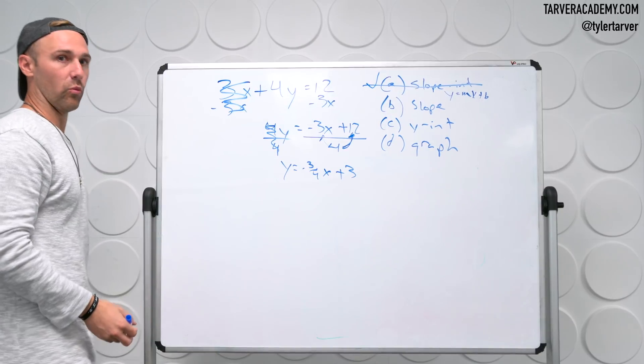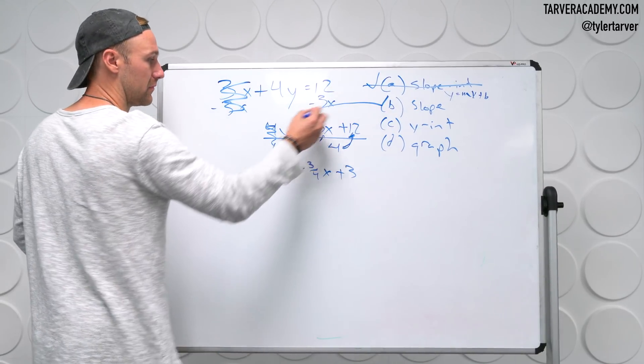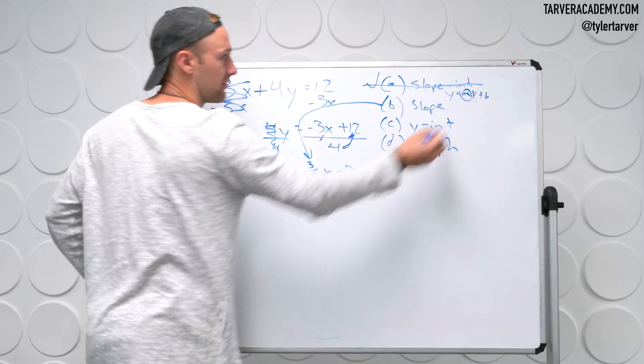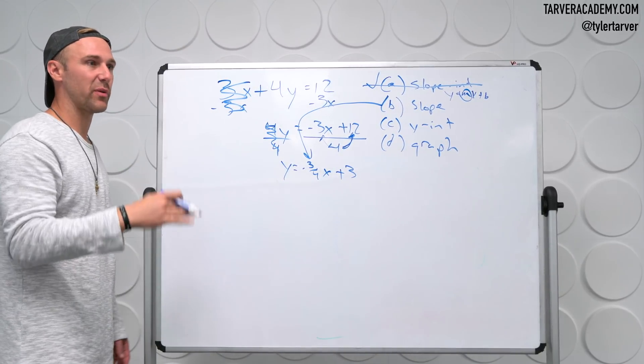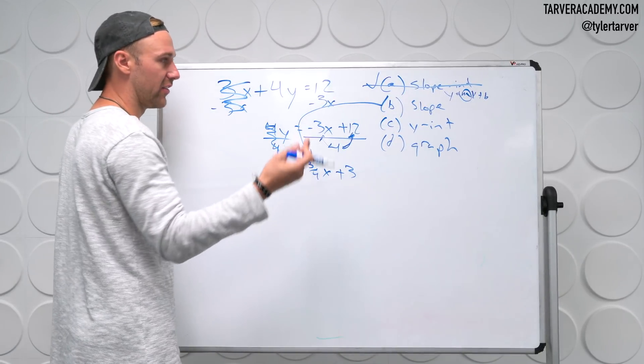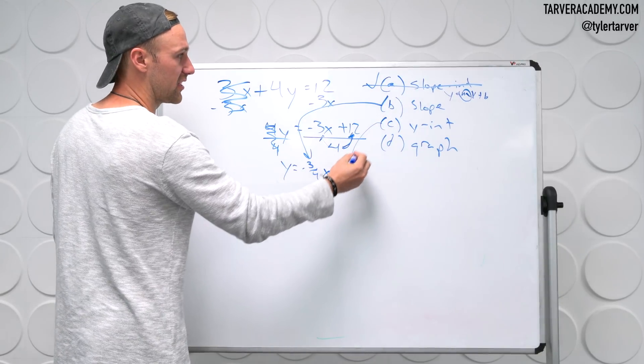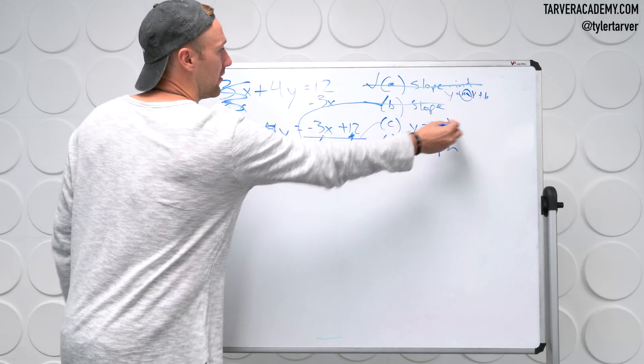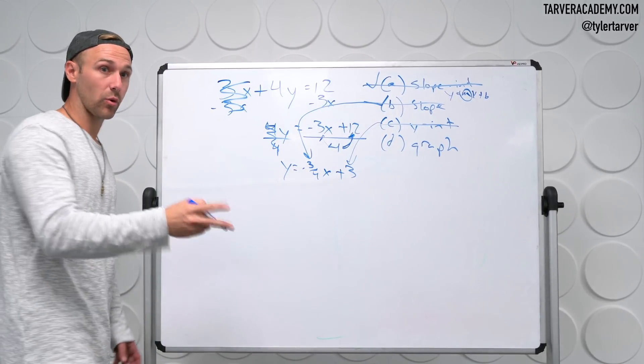About to be done with slope. What's our slope? Boom. The m is in front of the x. That's our slope. Once we put it in slope-intercept form, we can just look at it and say there's the slope, there's the y-intercept. Done.